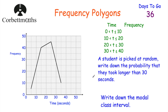Now sometimes a frequency polygon may be drawn for you, such as this one here. We've got a grouped frequency table from 0 to 10 seconds, 10 to 20 seconds, 20 to 30 seconds, and 30 to 40 seconds. So let's complete this table. From 0 to 10 seconds, the midpoint is 5, and going up from 5 we can see the frequency is 5. From 10 to 20 seconds, the midpoint is 15, and going up from 15 the frequency is 40.